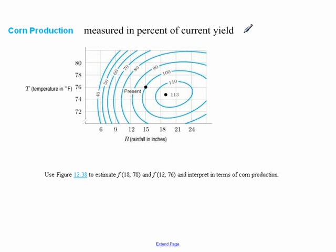Okay, now let's look at a contour map that isn't in terms of elevation. So here we have a graph that's looking at our corn production in terms of our percent of our current yield. So currently we're at 100% of what we're making because that's what we're measuring in terms of.